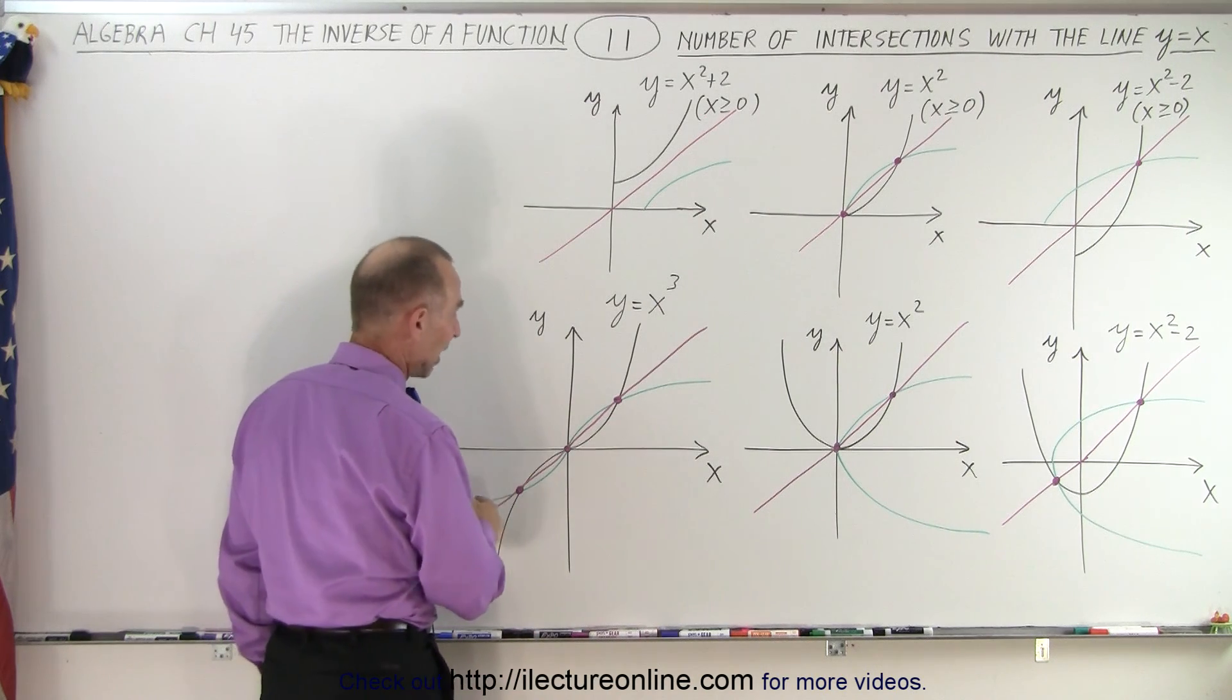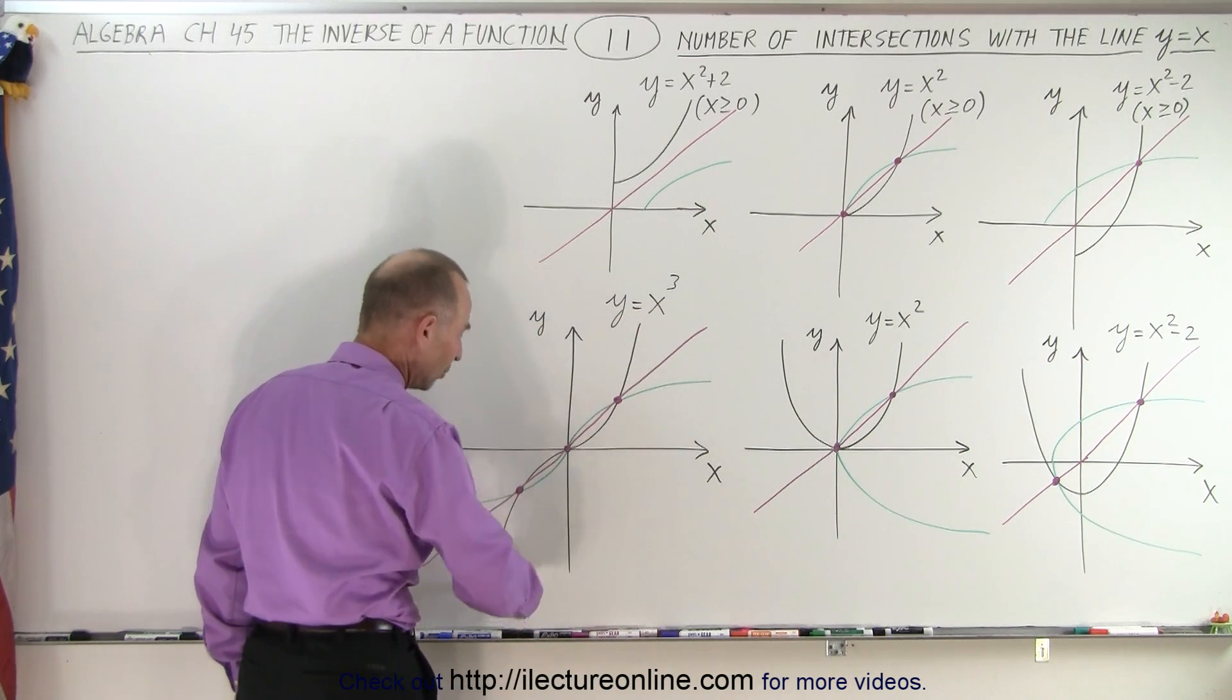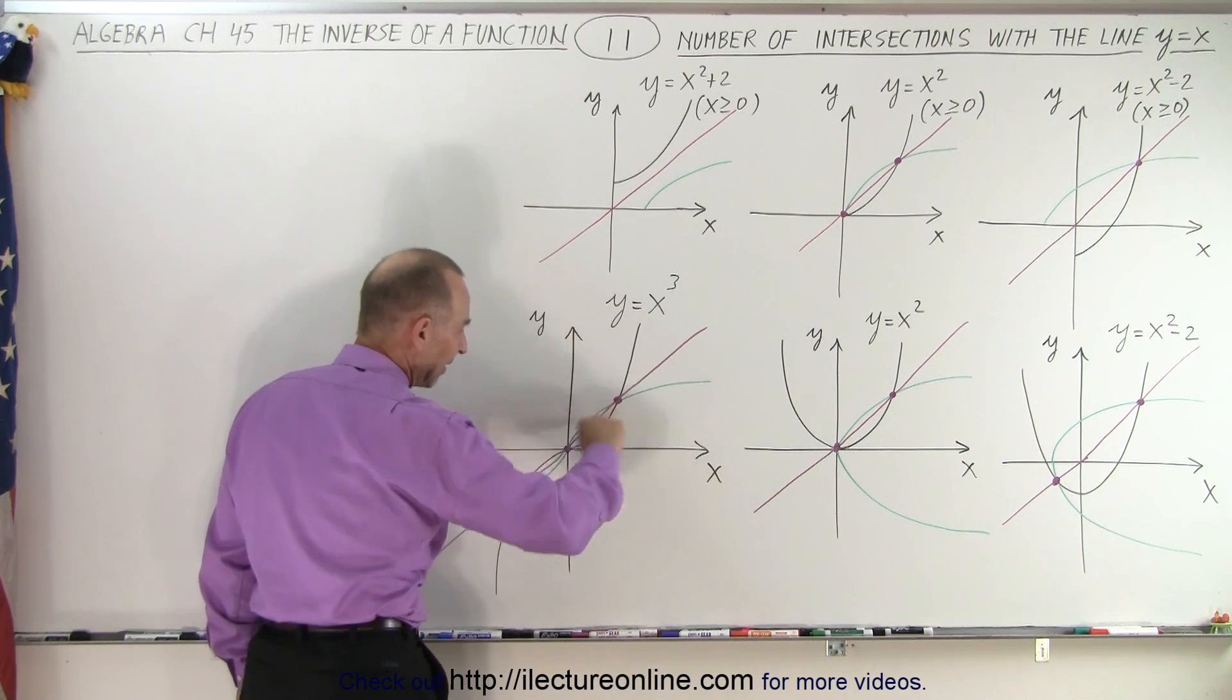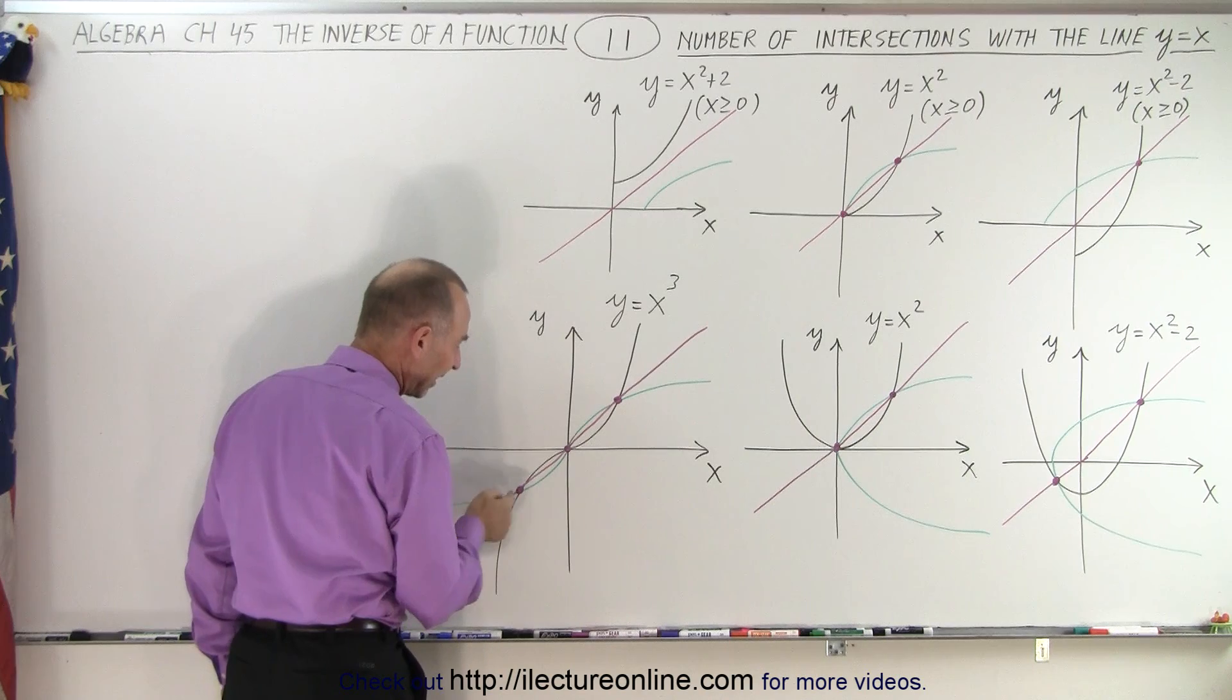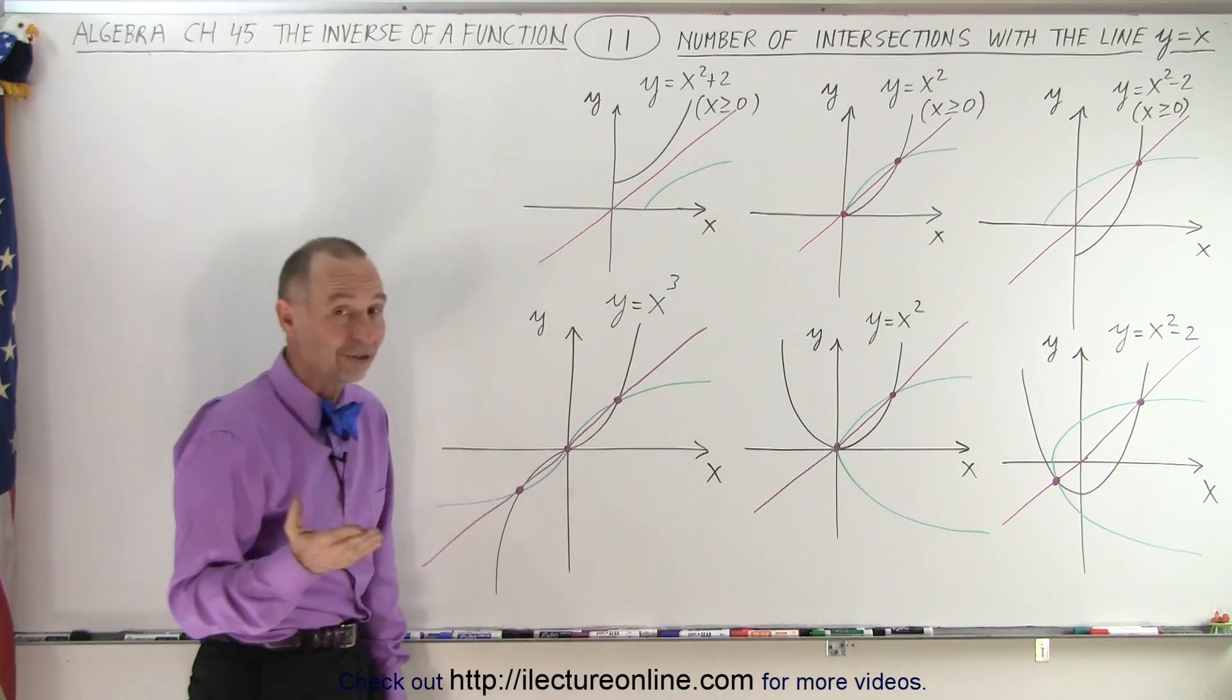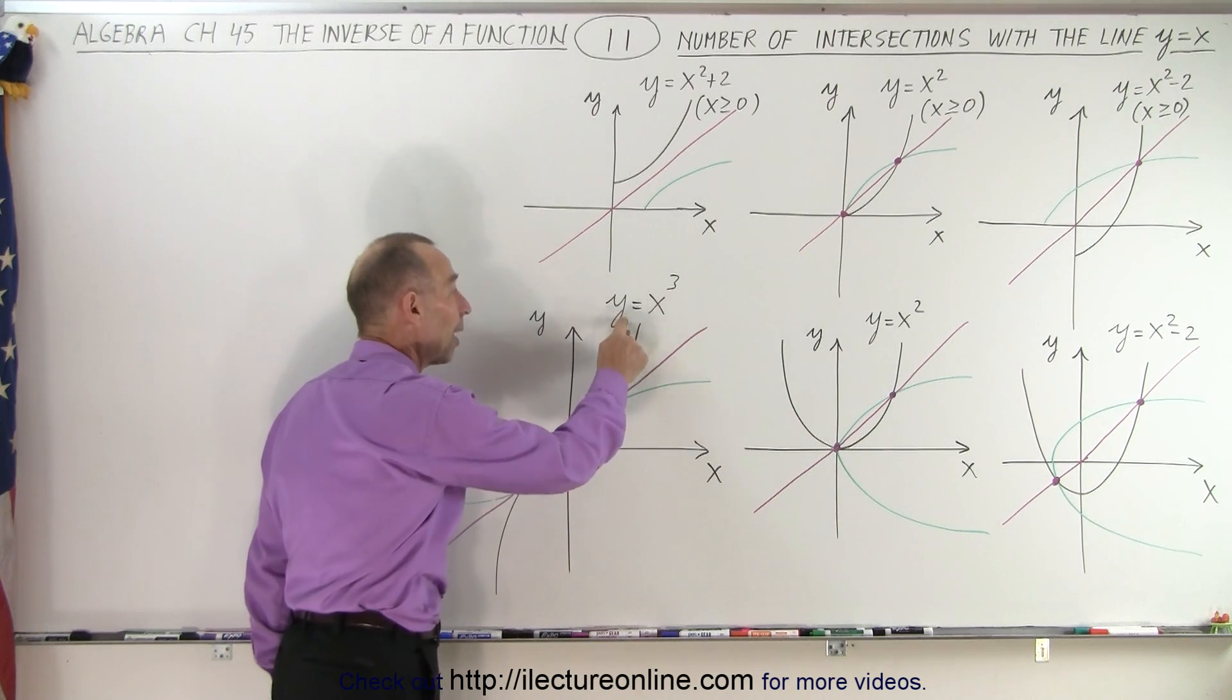Notice over here, we have the function y equals x cubed. It's an odd function. Notice that the inverse of the function crosses the y equals x line at the very same locations as the function itself crosses. In this case, there's three crossings because of y equals x cubed.